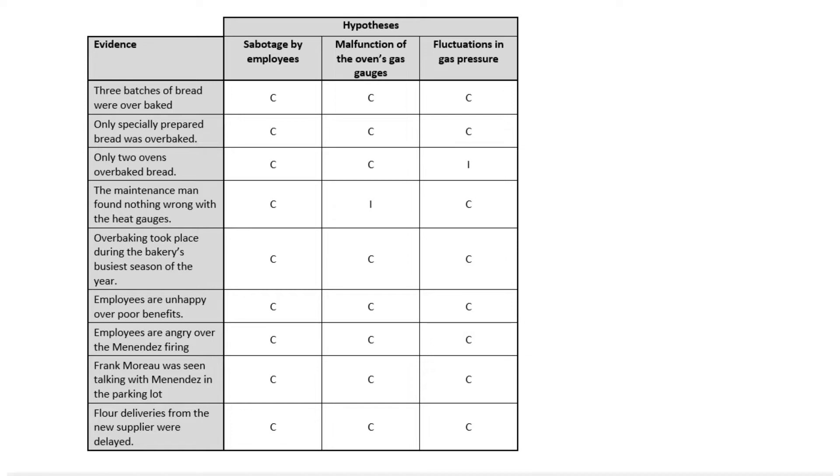Jones says there are a couple possible explanations or hypotheses. It's possible, given that preliminary run through the evidence, that the employees were sabotaging the bread, that they were over burning the bread, that they did something that caused that to happen.